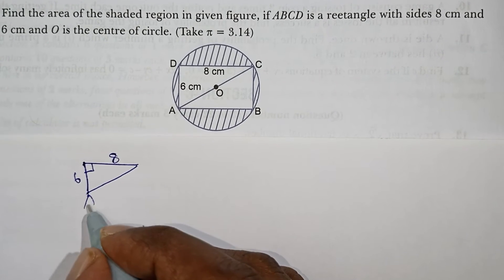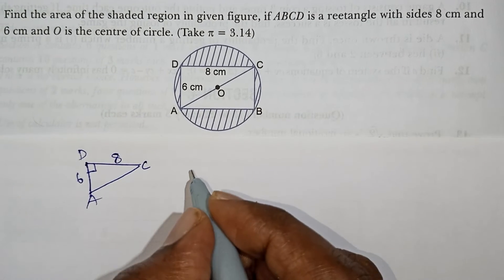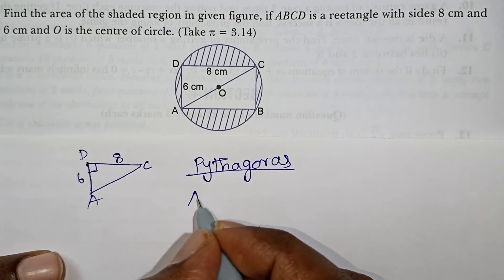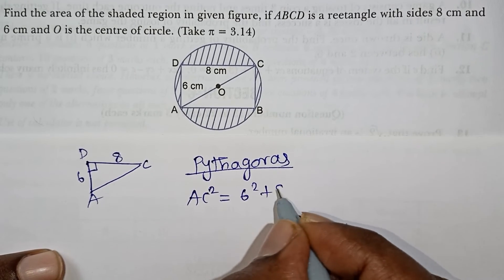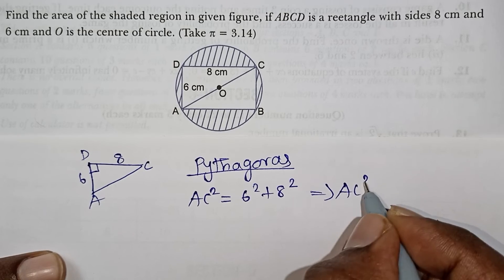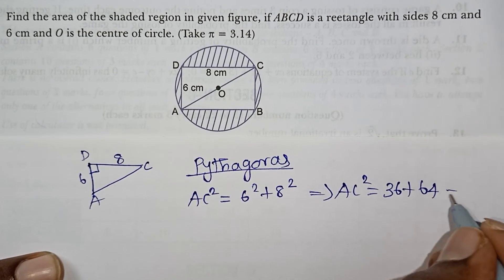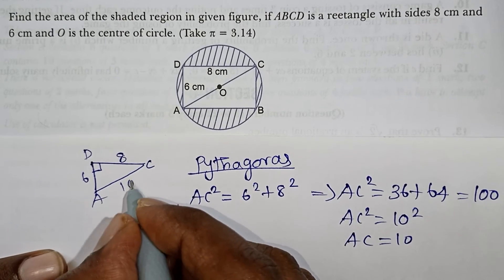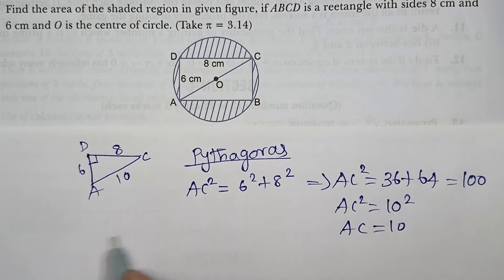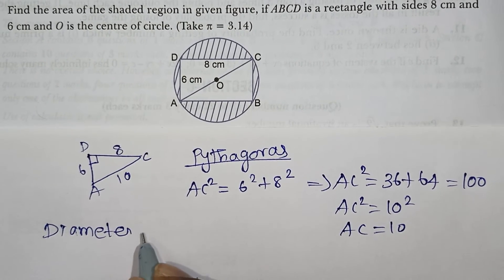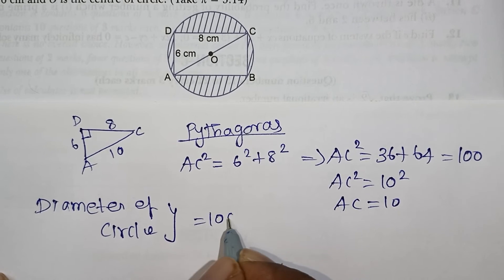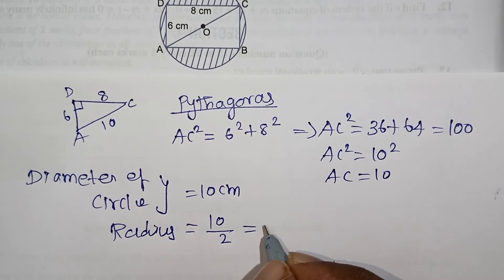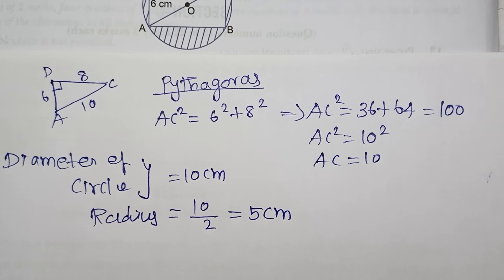Here the sides are 8 and 6. Using the Pythagorean theorem, AC — the diagonal — equals the square root of 6 squared plus 8 squared, which gives 10 cm. The diameter is 10 cm, so the radius equals diameter divided by 2, which gives radius equal to 5 cm.